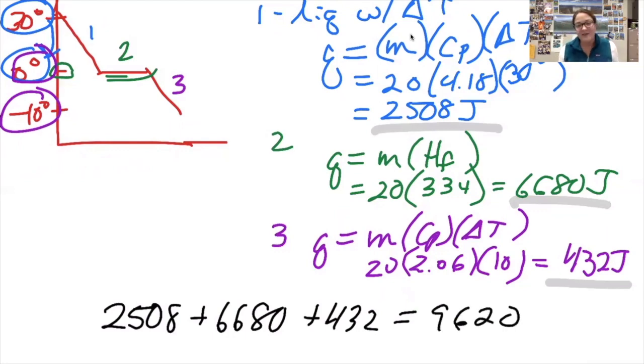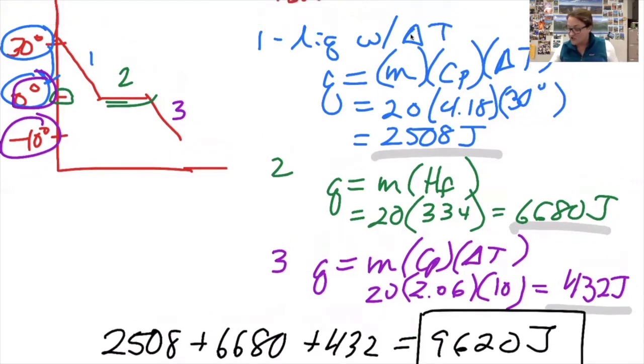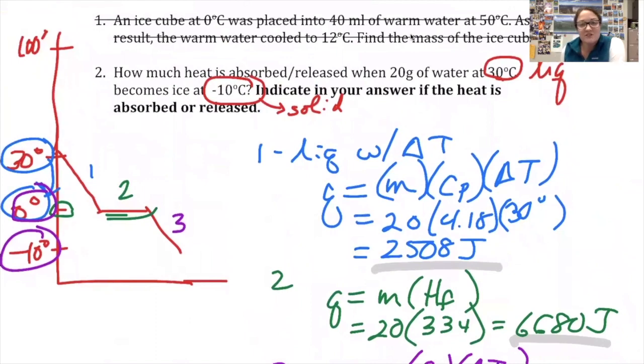9620 joules. The question explicitly asked me whether energy is being absorbed or released. If the temperature is going down and it's going from a liquid to a solid, it must be doing so by releasing energy, so released.